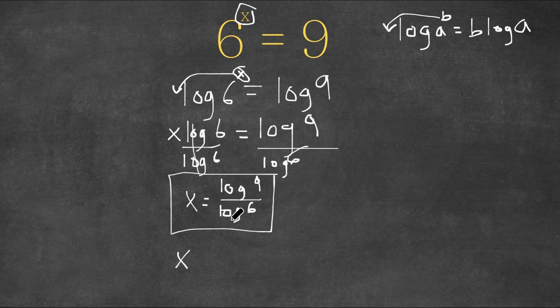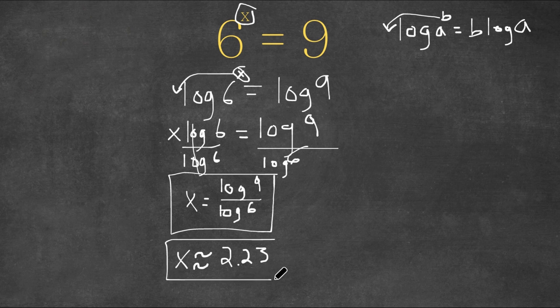To do that, we're going to use a calculator. If I plug this into my calculator, x is approximately 2.23. There's no way you can do this using paper and pencil; you really have to use a calculator. So our exact answer is x equals log 9 over log 6, and our approximated answer is x is approximately 2.23.